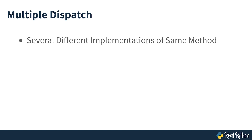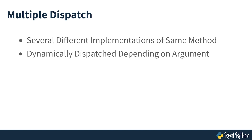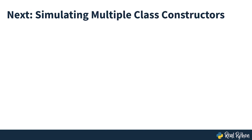Another technique that some programming languages use to provide multiple ways to call a method or function is multiple dispatch. With this technique, you can write several different implementations of the same method or function and dynamically dispatch the desired implementation according to the type or other characteristics of the arguments used in the call. You can use a couple of tools from the standard library to pull this technique into your Python code. Python is a fairly flexible and feature-rich language and provides a couple of ways to implement multiple constructors and make your classes more flexible.